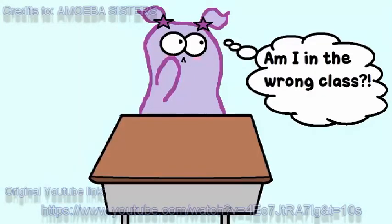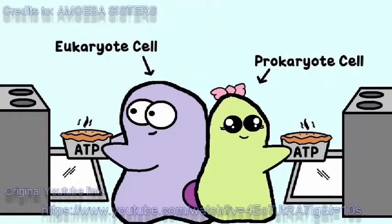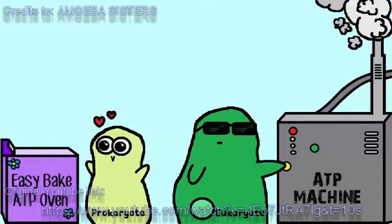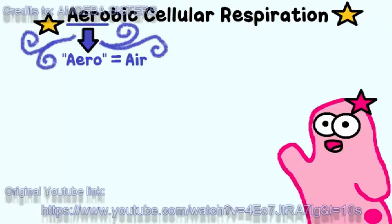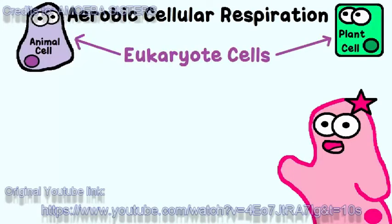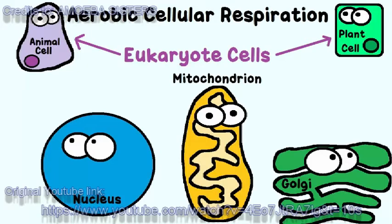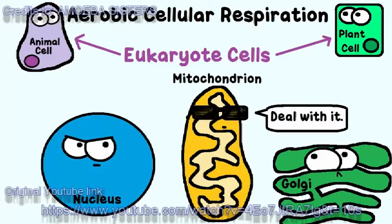So where am I going with this? Well, cells have to make ATP energy. It doesn't really matter what kind of cell you are, prokaryote or eukaryote, you have to make ATP energy. The process for making that ATP energy can be different depending on the type of cell, but one way that this can be done efficiently is called aerobic cellular respiration. We are going to focus on aerobic cellular respiration in eukaryote cells. Remember that eukaryote cells have many membrane-bound organelles, such as mitochondria. They're going to be kind of a big deal in this. So let's get started.